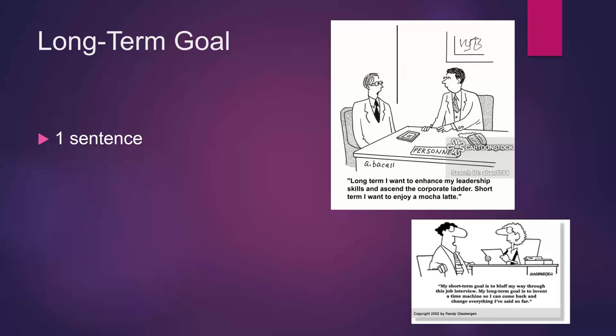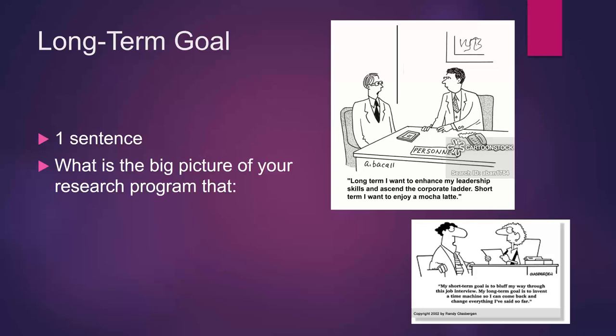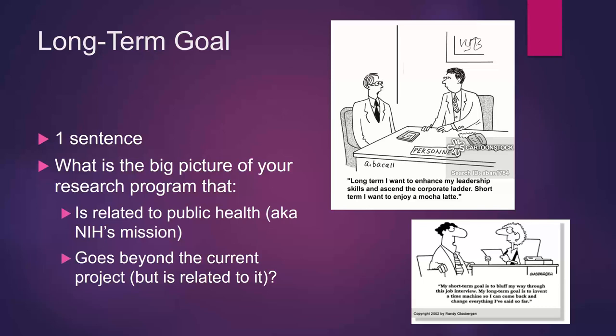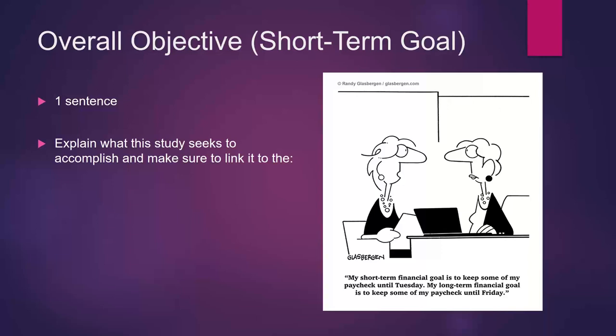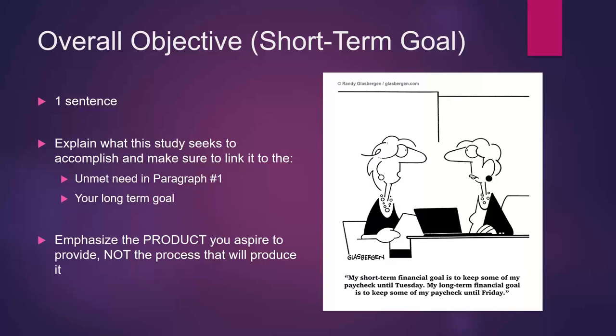You can see these examples here — you're setting up first with a long-term goal. In one sentence, say what's the big picture of your research program related to public health and NIH's mission, going beyond the current project but related to it — this could be your overarching career research goal. For the overall objective or short-term goal, explain in a sentence what the study seeks to accomplish and make sure to link it to the unmet need in paragraph one and your long-term goal. Emphasize the product you aspire to provide, not the process that will produce it.